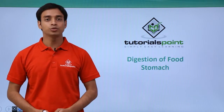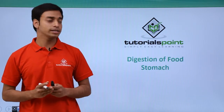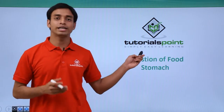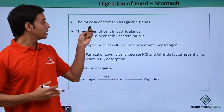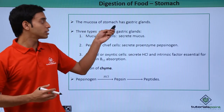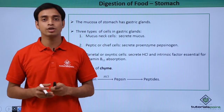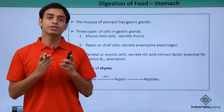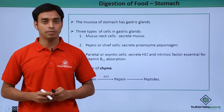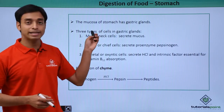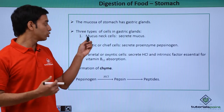Hello everyone, welcome to Tutorials Point. In this video we will be discussing the digestion of food taking place in the stomach. The mucus of the stomach has got gastric glands with various secretions which actually help in the digestion of food. The stomach gastric glands are made up of three different types of cells.